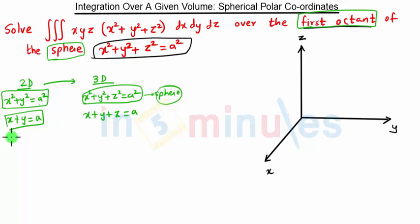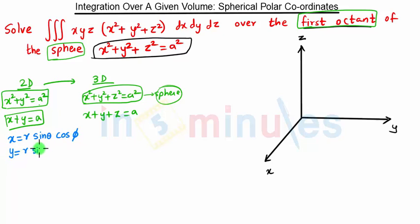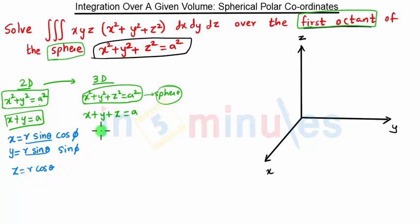The basic substitution for spherical coordinates is: x = r sinθ cosφ, y = r sinθ sinφ, and z = r cosθ. Note that r sinθ is common in x and y, with cosφ and sinφ respectively. The volume element dx dy dz becomes r² sinθ dr dθ dφ.